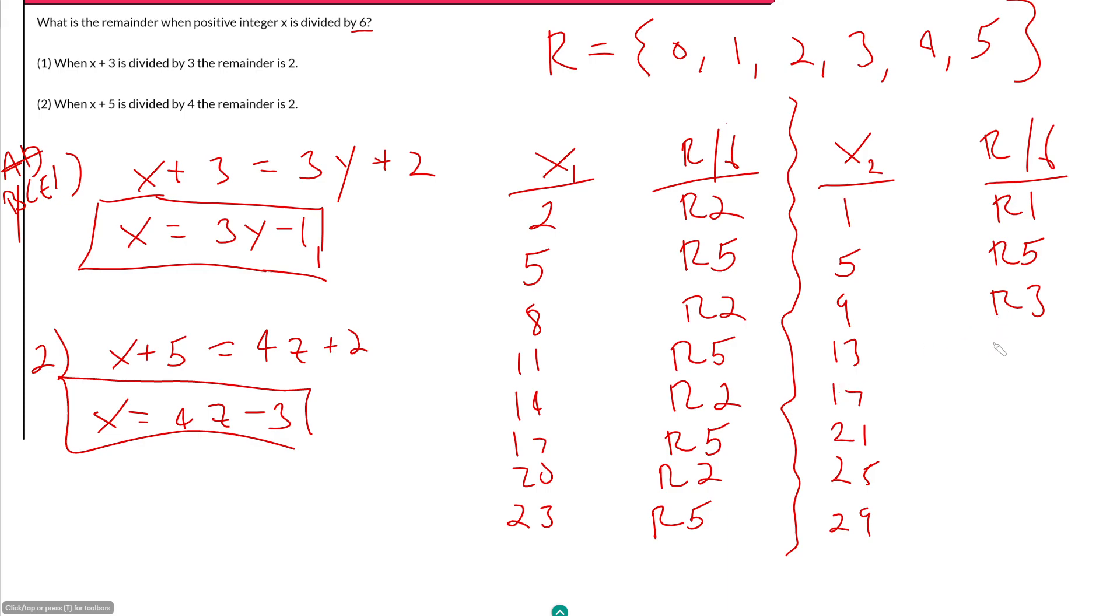13 divided by 6 would be 2 remainder 1. 17 divided by 6 would be 2 remainder 5. 21 divided by 6 would be 3 remainder 3. So it does look like we have a pattern, this 1, 5, 3 pattern. 25 divided by 6 is 4 remainder 1. 29 divided by 6 would be 4 remainder 5. Let's complete our pattern. 33 divided by 6 would be 5 remainder 3. So we already said our second statement is insufficient because we have three options for our remainder here.